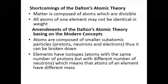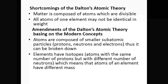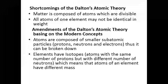The amendment of Dalton's atomic theory, based on modern concepts provided by modern scientists, states: atoms are composed of small subatomic particles which are protons, neutrons, and electrons, and thus atoms can be broken down. J.J. Thomson was the first to discover electrons — he used a cathode ray tube as a physicist and began making investigations, observing electrons moving and light being emitted.